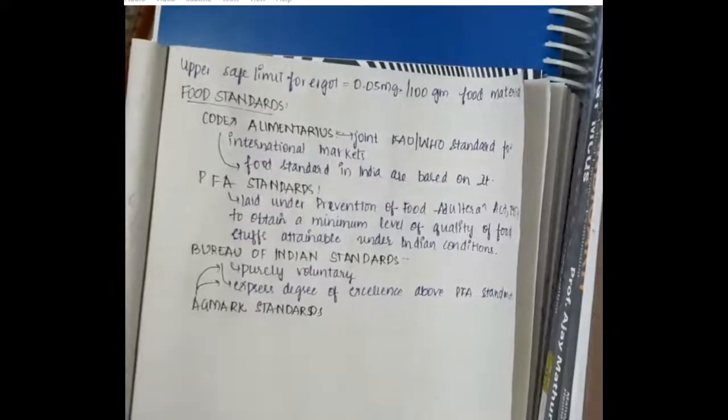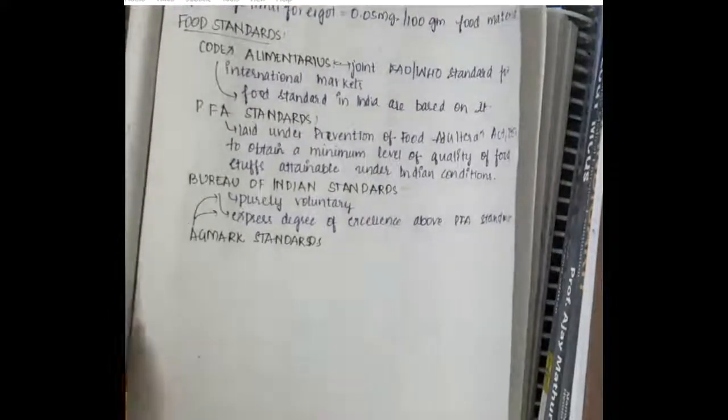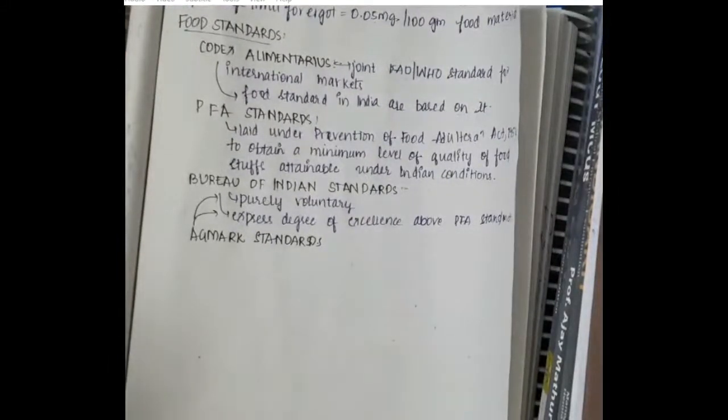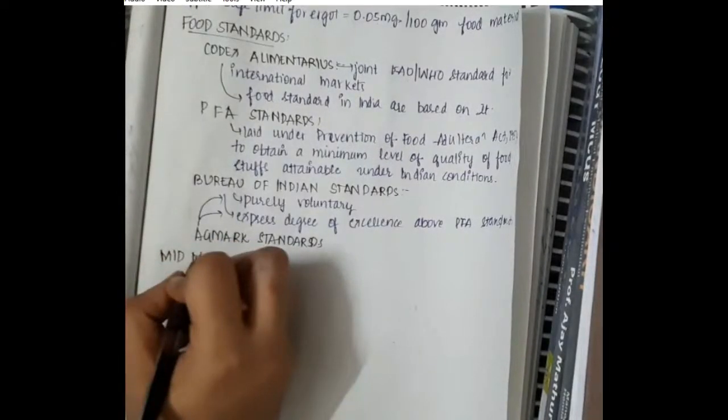These are the different food standards which are available for making sure that the packaged food which we get are up to the mark in quality level. This is about food adulteration. Thank you guys for watching my lecture. Thank you.